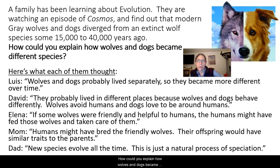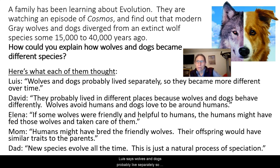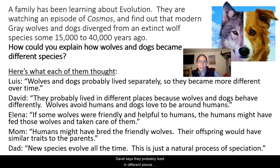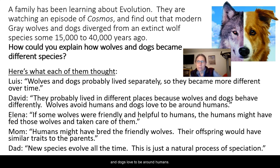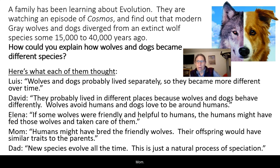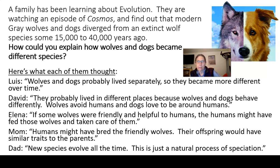How could you explain how wolves and dogs became different species? You have a variety of people here. Louise says wolves and dogs probably lived separately, so they became more different over time. David says they probably lived in different places because wolves and dogs behave differently — wolves avoid humans and dogs love to be around humans. Elena says if some wolves were friendly and helpful to humans, the humans might have fed those wolves and taken care of them. Mom says humans might have bred the friendly wolves, and their offspring would have similar traits to the parents. Dad says new species evolve all the time — this is just a natural process of speciation.